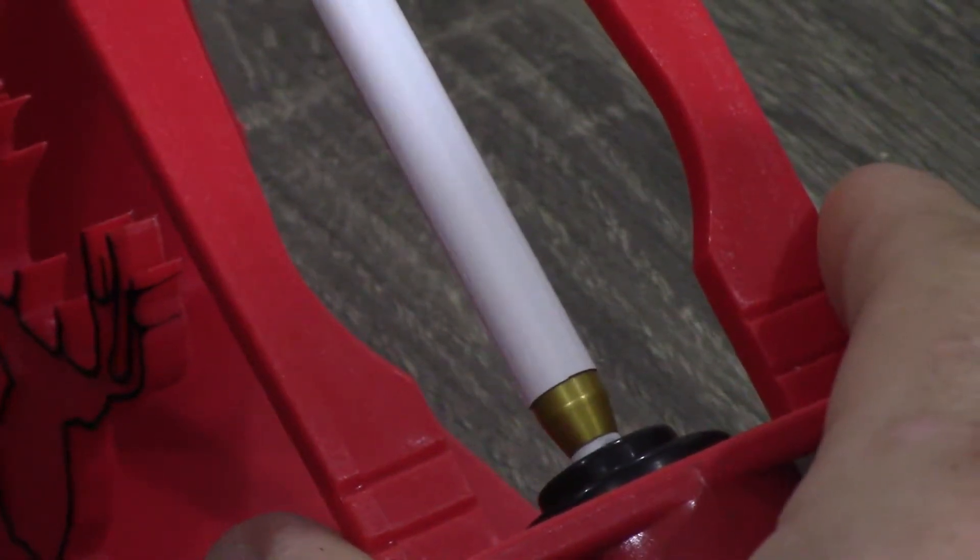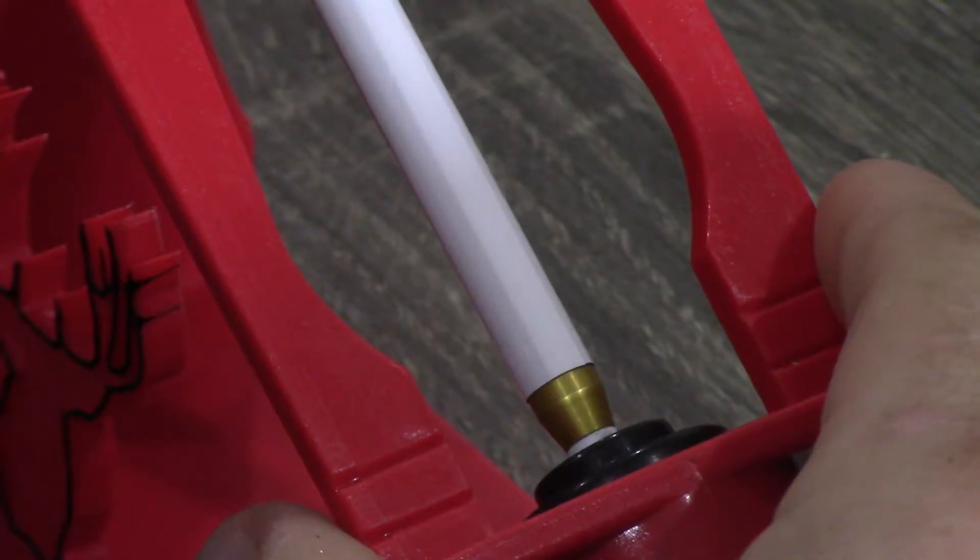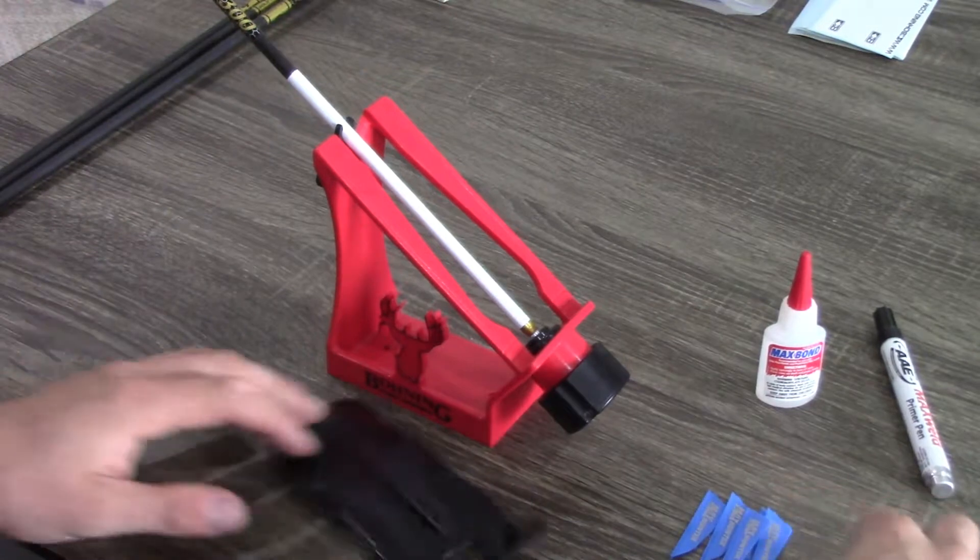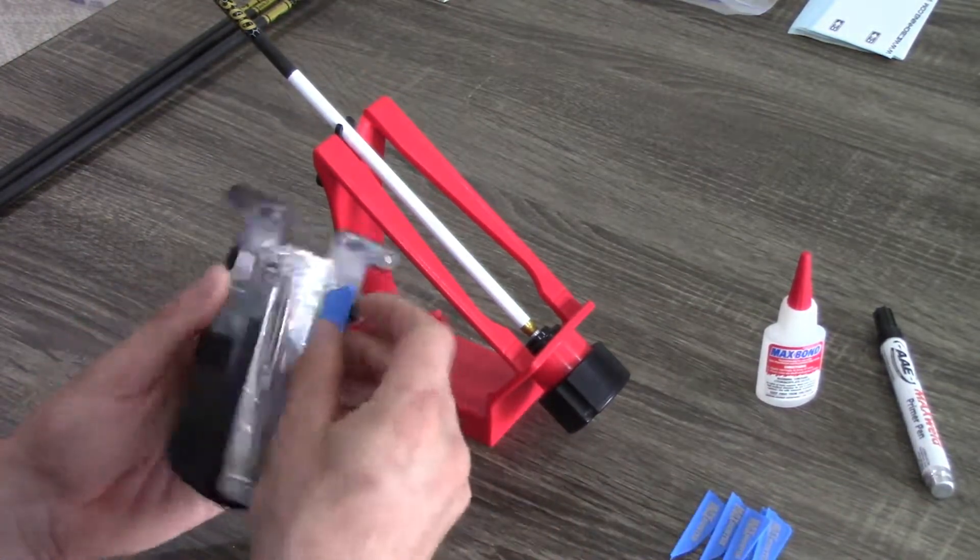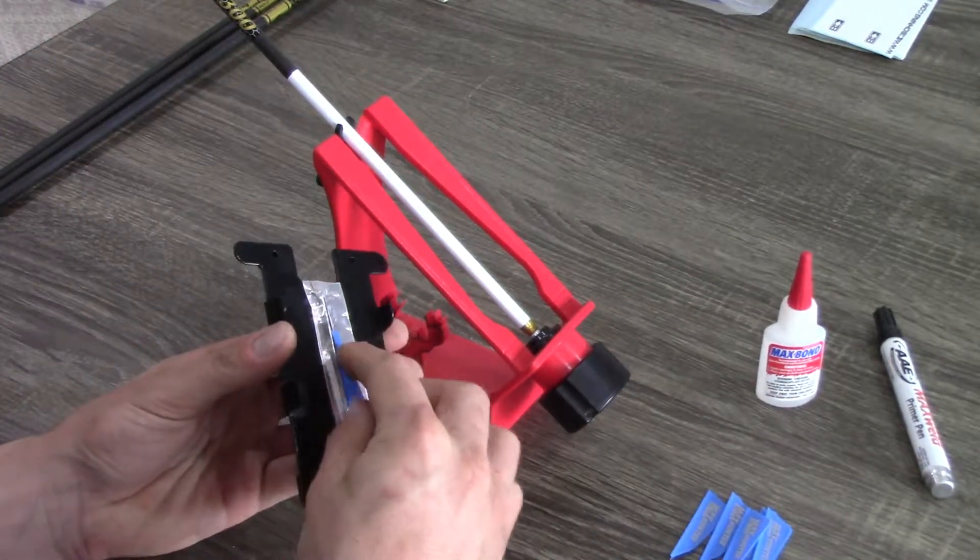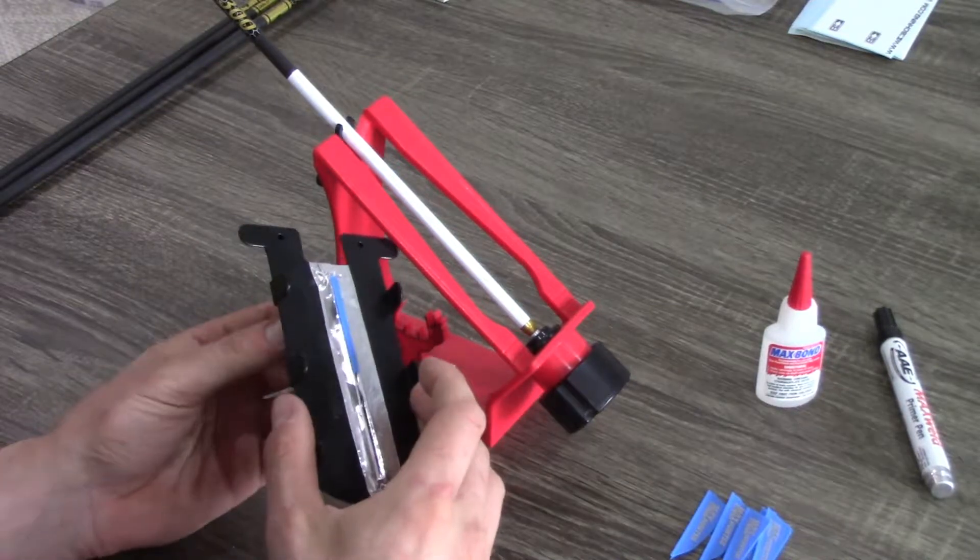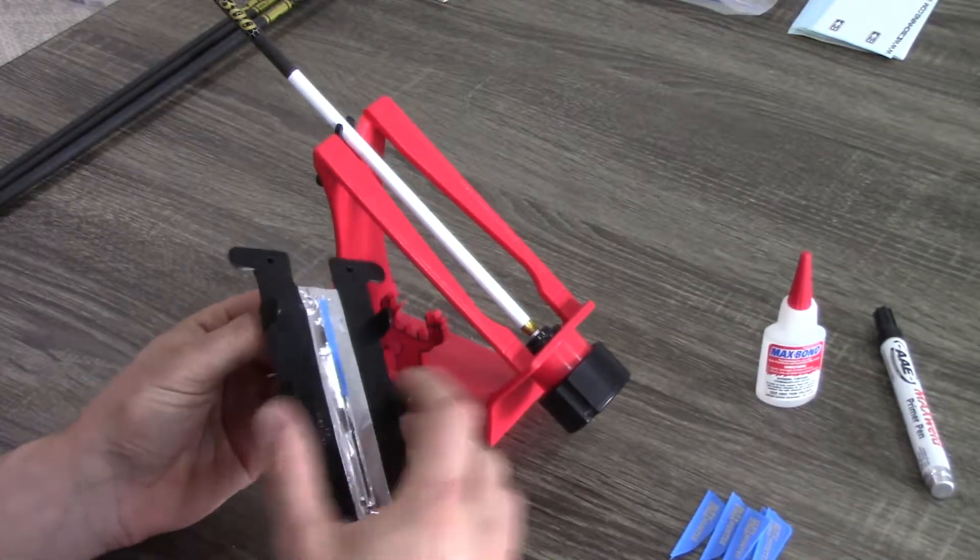Now for the first fletch, I'm going to line it up with the seam of the wrap. This is just going to give my wrap a little more strength and make sure it doesn't peel apart.